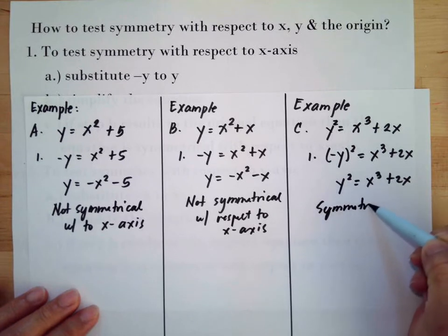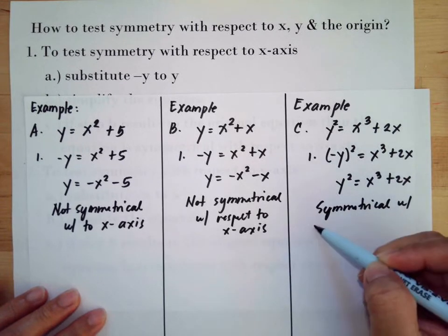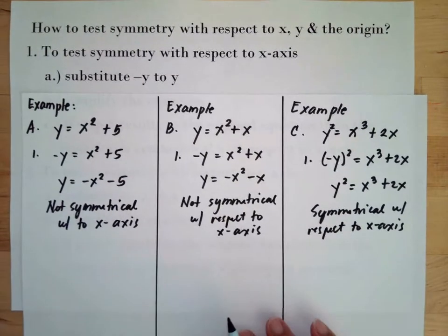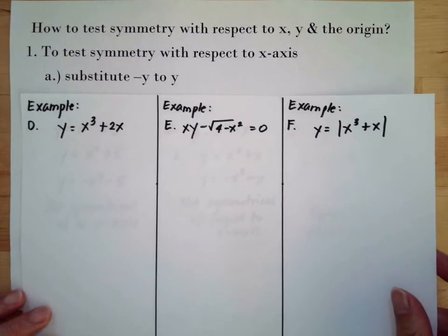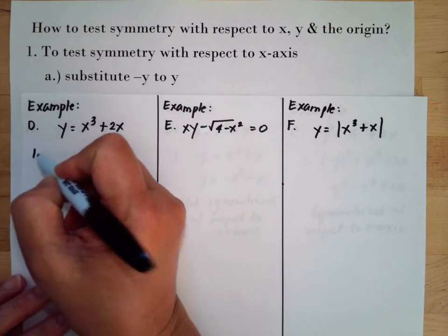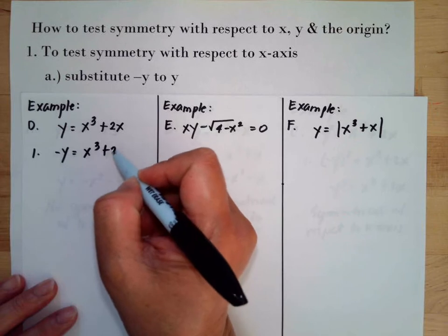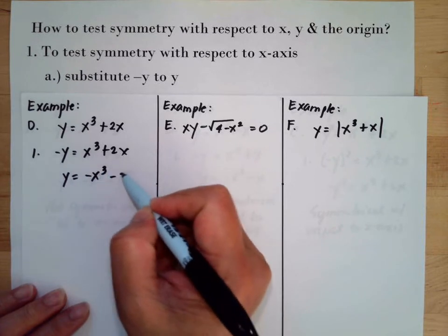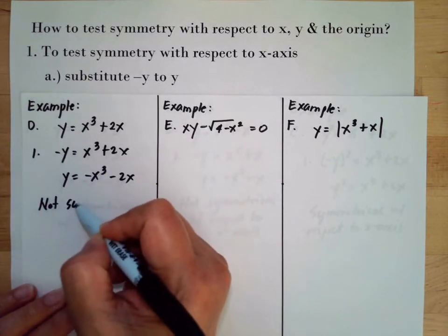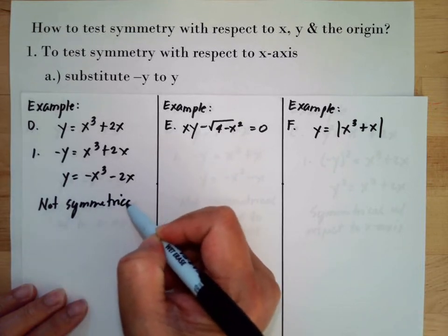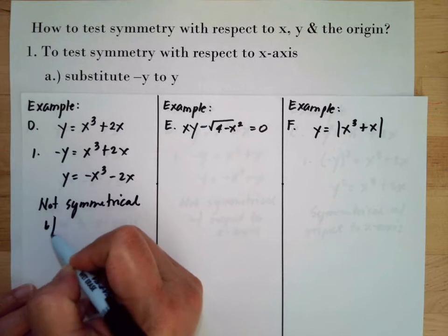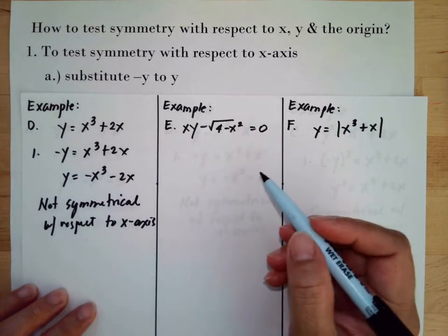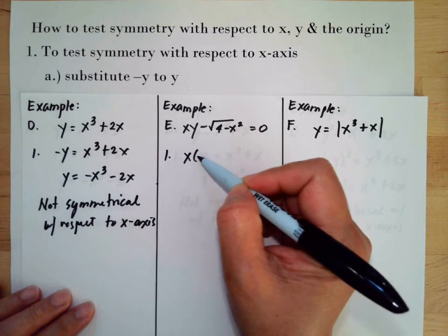Now another example. The first one: we substitute negative y for y, which results in the same thing, so this will not be symmetrical with respect to the x-axis. The second one: substituting negative y also does not yield the same equation, so it is not symmetrical with respect to the x-axis.